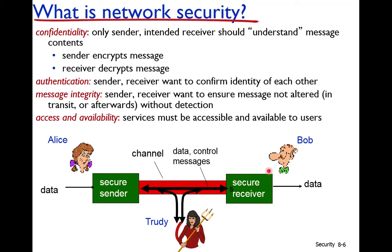When Alice is sending a message to Bob, the message should be transmitted only from Alice to Bob. If someone like Trudy reads it, they shouldn't understand it. The message should be changed so that even if intercepted, it cannot be understood. Confidentiality can be achieved using an encryption algorithm — the sender encrypts the message and the receiver decrypts it.